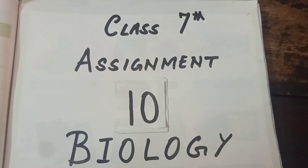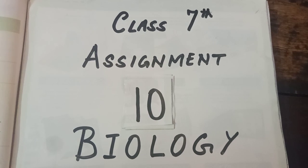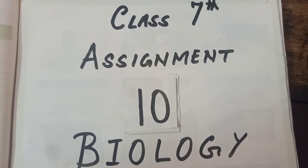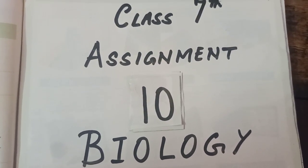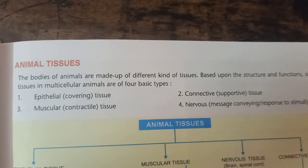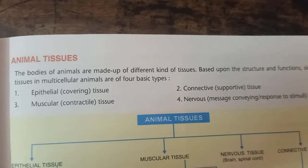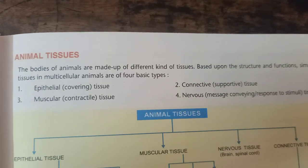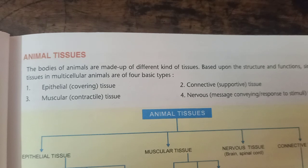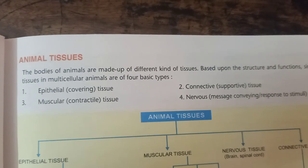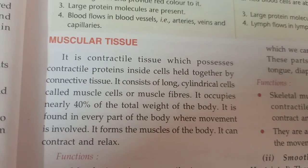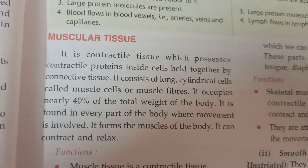Welcome back students. This is assignment number 10. In this session I am going to teach you about the third type of animal tissue, that is muscular tissue. There are four types of animal tissues: epithelial, connective, muscular, and nervous tissue. Today we focus on the third type — muscular tissue, also called contractile tissue, which possesses contractile proteins inside cells held together by connective tissue.